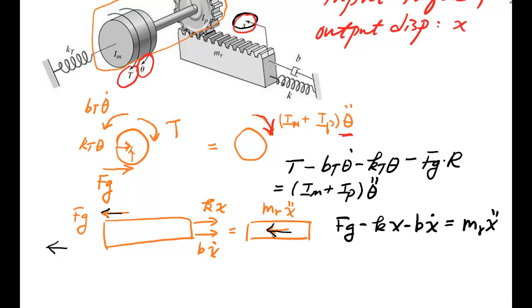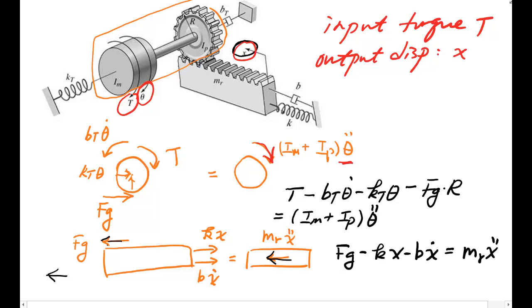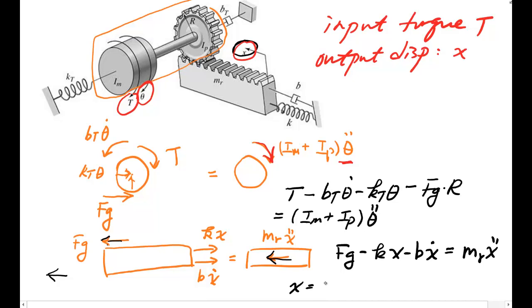One last equation is needed, which is the relationship between x and theta. So in this case, tangential velocity ẋ should be equal to rθ̇. ẋ equals r (should be capital R) θ̇, and ẍ equals rθ̈.